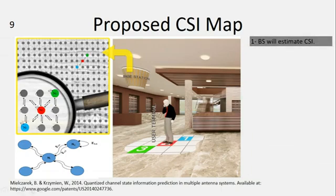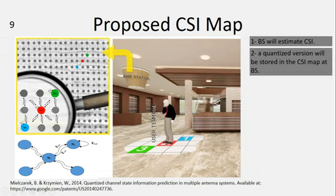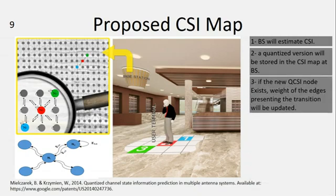First, the base station will estimate the channel state information, and then a quantized version of this CSI will be stored at the base station into the CSI map. During the learning process, if the new quantized CSI node exists, the weight of the edge presenting the transition will be updated.